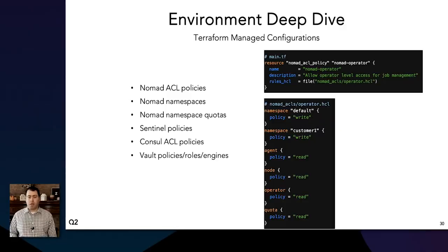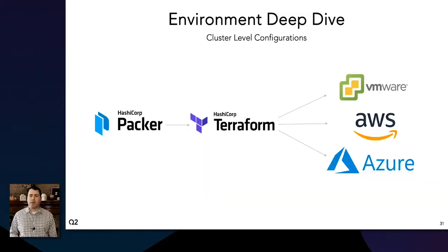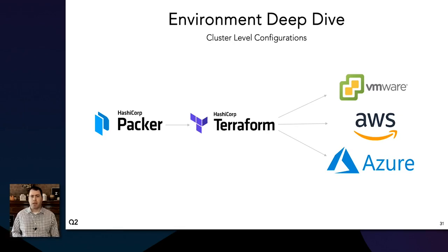All cluster-level configurations are managed through Terraform — Nomad ACLs, namespaces, Consul ACLs, Sentinel policies, Vault policies, roles, and engines. That helps keep management practices familiar and consistent, and we store those all in version control. We use VMware in our data centers for VM hypervisors and leverage Terraform for provisioning. We have Packer pipelines that build VM templates which are about 95 percent configured. We then use Terraform to build out the Nomad clients and leverage user data and cloud-init to lay on the final five percent of configurations, making provisioning extremely quick and painless. For Windows Nomad clients we use cloud-base-init and have the same user data method. This is helping us manage our on-prem environments the same way we're managing cloud resources.